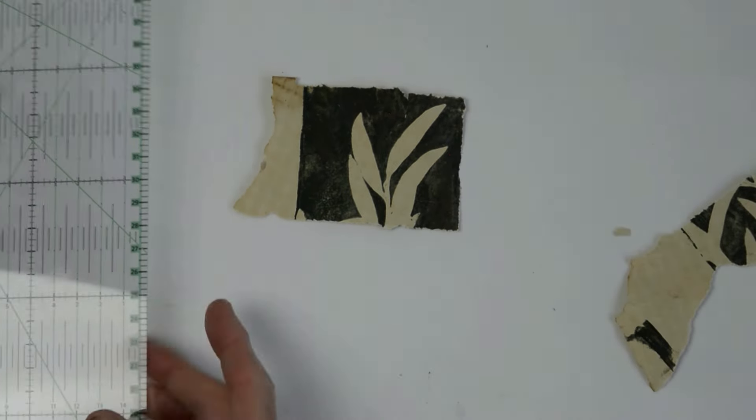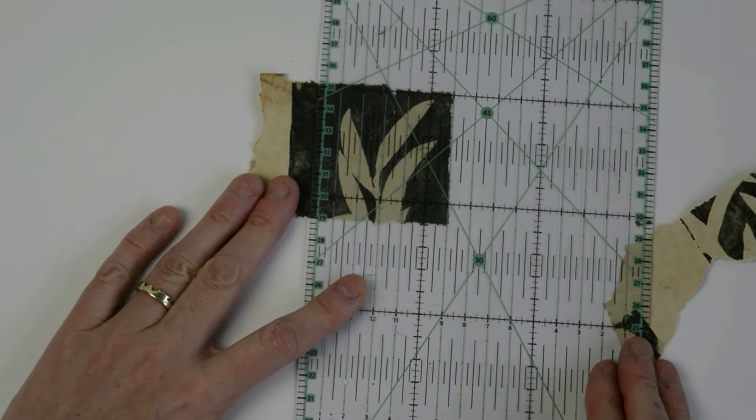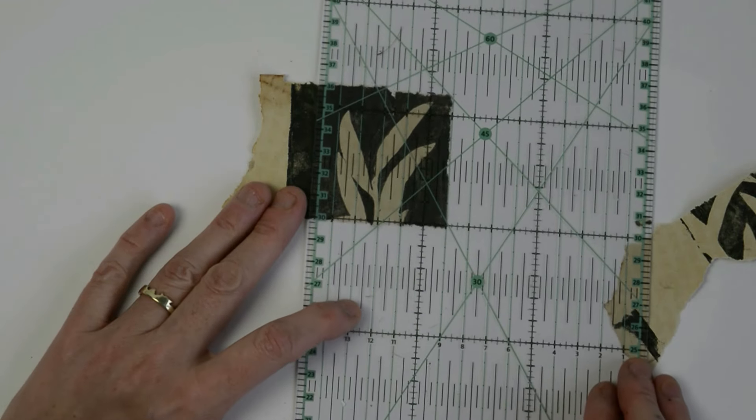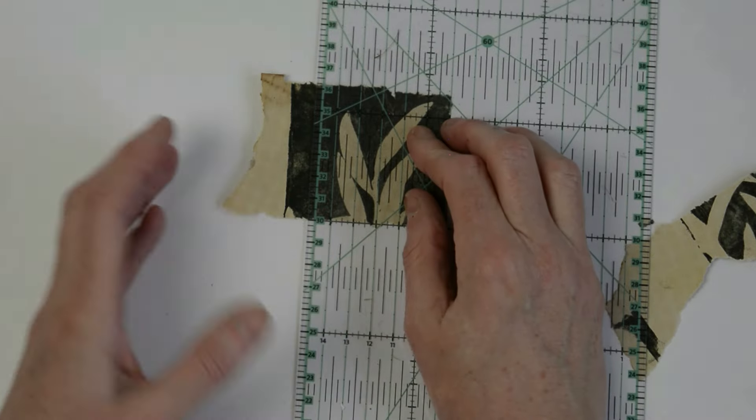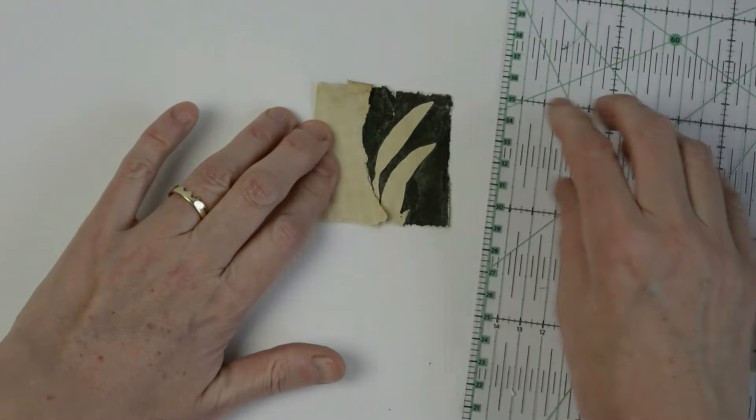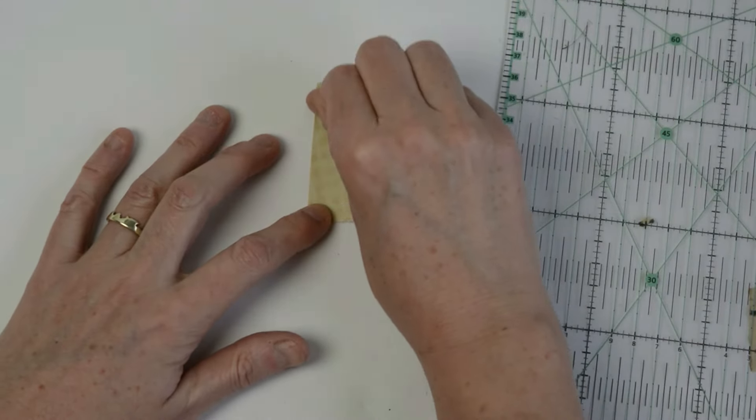I picked up a frame in a charity shop, which is the equivalent of a thrift store, which already had an aperture mount cut out. And I worked into that in terms of fitting 16 squares into the pre-cut mount board.